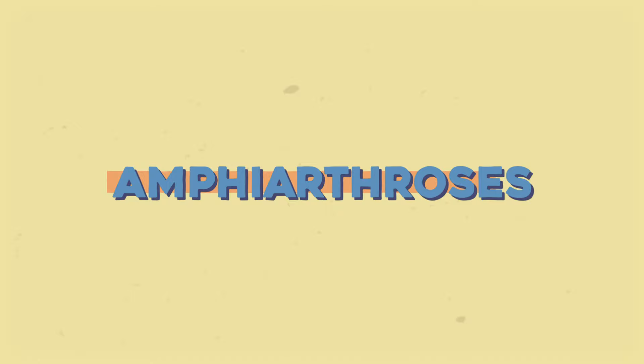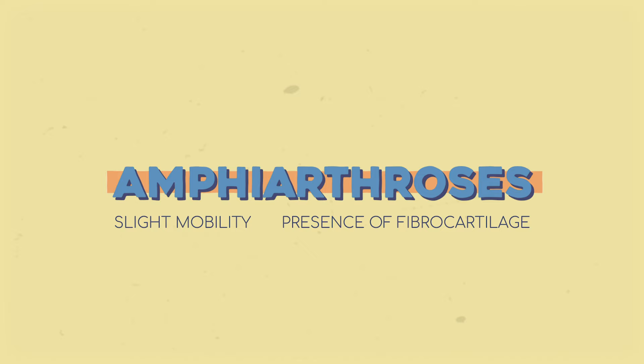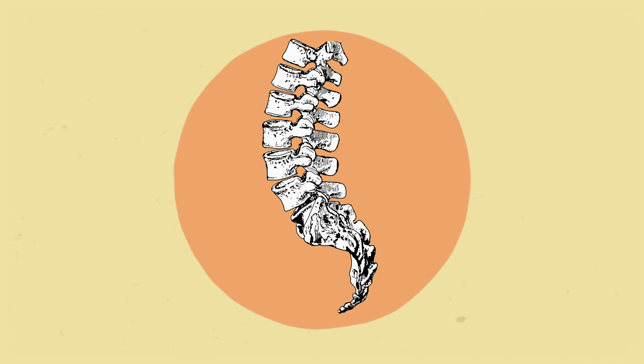Amphiarthroses have slightly more mobility, but only because they have dense fibrocartilage between the two bones. This includes the fibrocartilage of your intervertebral discs and other mostly immobile joints like the pubic symphysis.